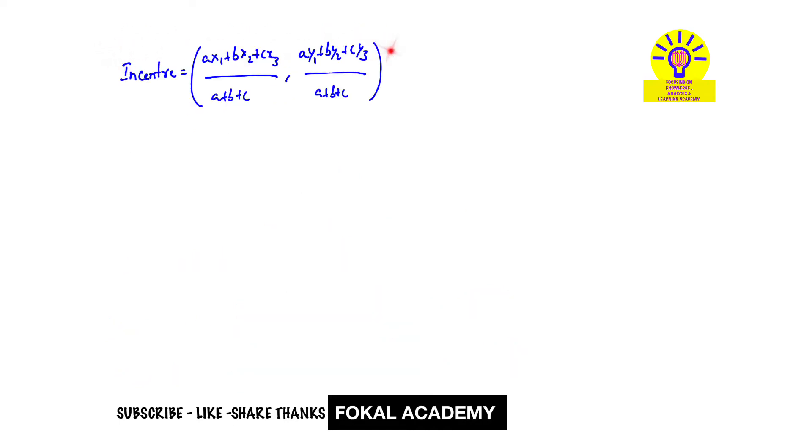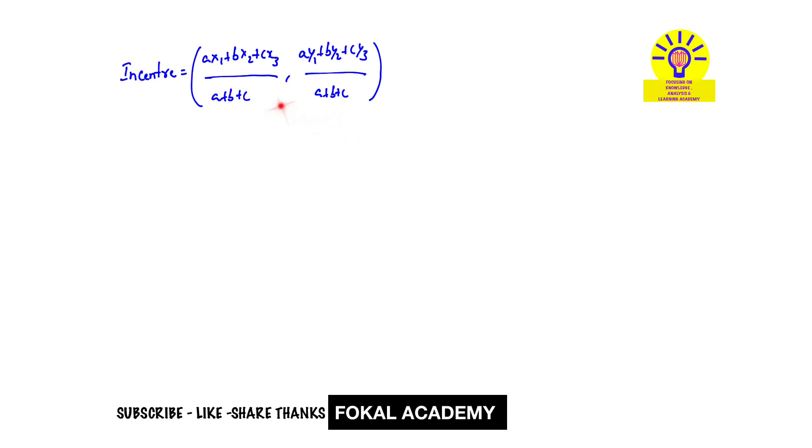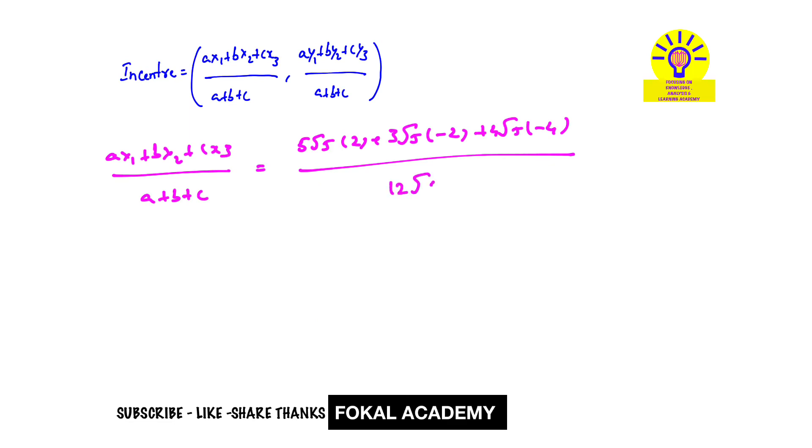We know the formula, the incenter formula. Here a, b, c are the lengths of the sides, and x₁, x₂, x₃ and y₁, y₂, y₃ are the vertices. Now substitute all this data in this formula. First, (ax₁ + bx₂ + cx₃)/(a + b + c) equals 5√5×2 + 3√5×(-2) + 4√5×(-4) divided by 12√5. By simplifying, this becomes (10√5 - 22√5) divided by 12√5, which equals -1.